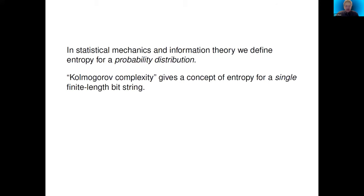In statistical mechanics and information theory, we often define entropy for a probability distribution — although there are quantum generalizations and so on, this is the simplest notion of entropy. But Kolmogorov complexity is a notion of entropy that lets you define a concept of entropy for a single bit string of finite length. I'm just using strings of bits — zeros and ones — as a convenient representation of data, but you could use natural numbers or anything else.